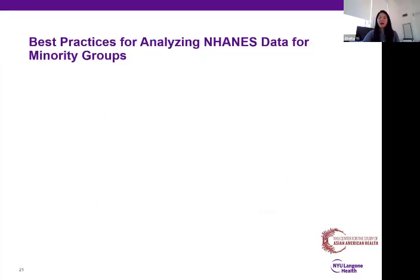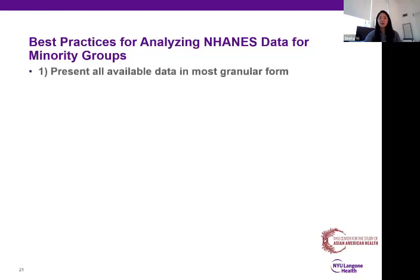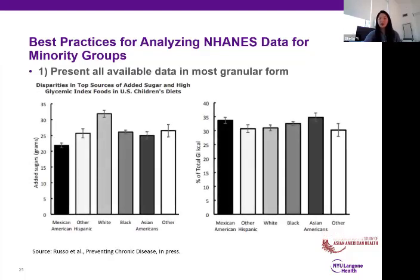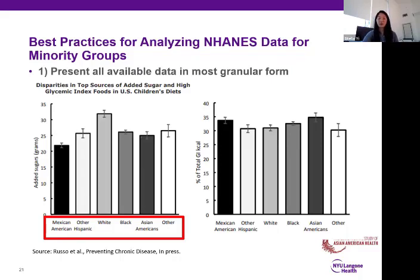I want to offer a few suggestions for best practices for analyzing NHANES data for minority groups. Some of these lessons learned don't apply only to Asian Americans, but also apply to other racial ethnic minority and immigrant groups as well. Number one: present all available data in its most granular form. This is a recent analysis using NHANES where we assessed disparities in sources of added sugar and high glycemic index foods across racial ethnic groups. We presented data on all racial ethnic groups in the most granular form available — this is particularly important at a national level for the Hispanic population, where those coming from countries like El Salvador or Cuba have been large sources of Hispanic immigrants in recent years.